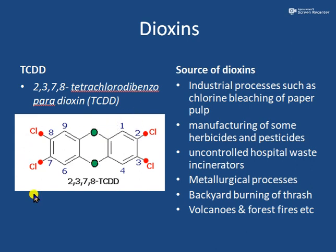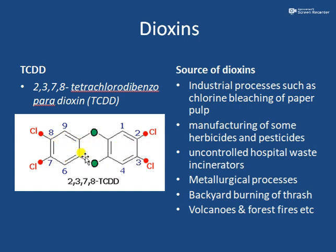You need not learn the structure in detail, but you need to know what it is. Dioxins are a wide range of compounds — they can be chlorinated at two locations, sometimes at four locations. Two oxygens will be present, and the structure also contains a benzene ring, which adds to its recalcitrance so that degradation will not be easy.